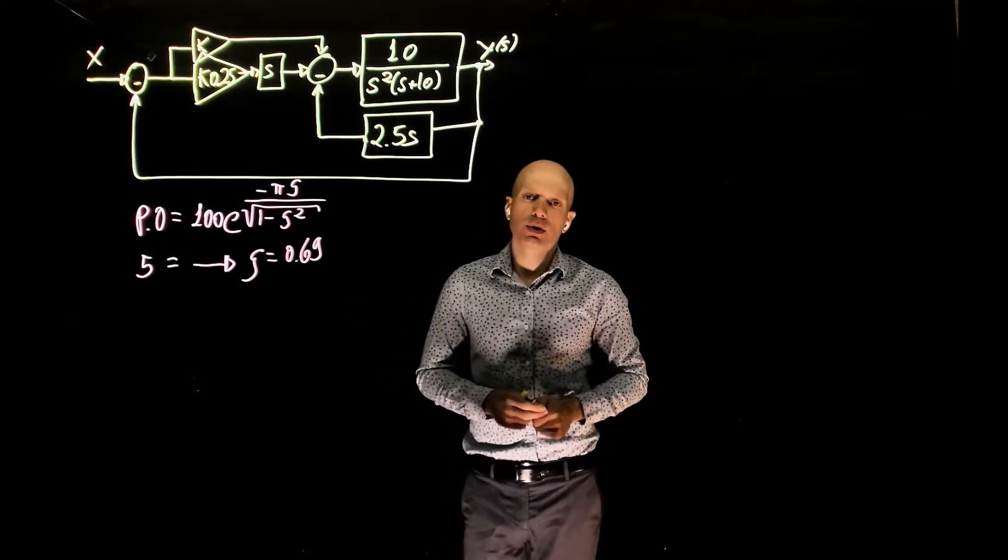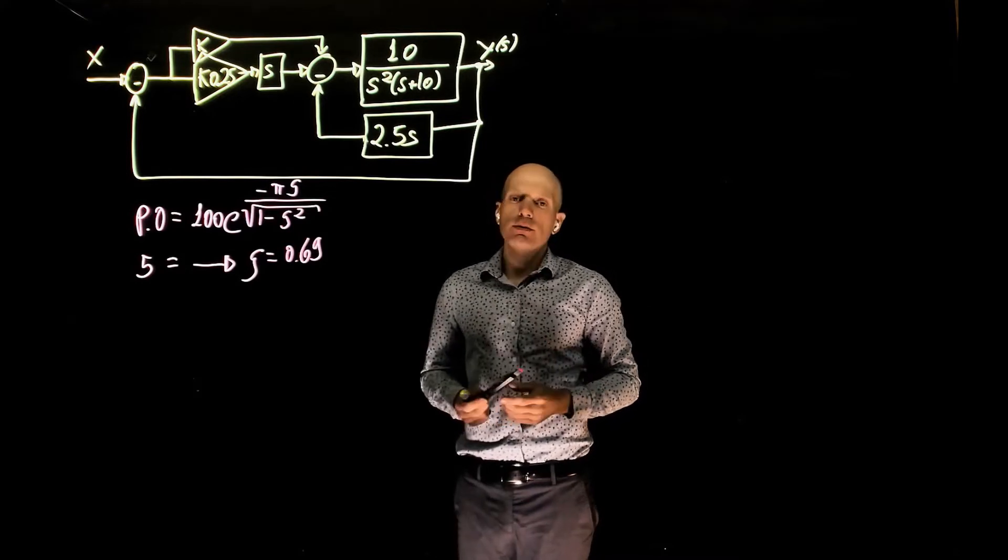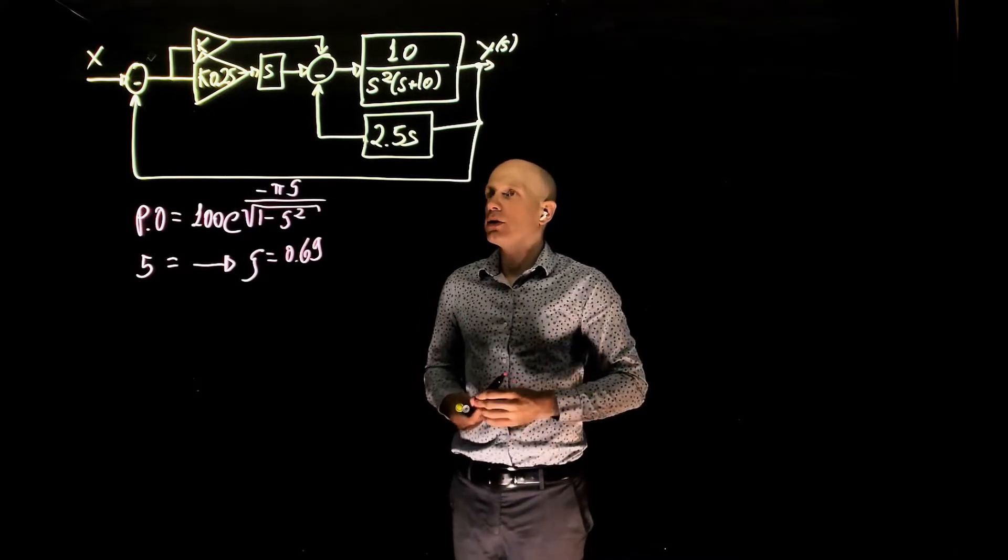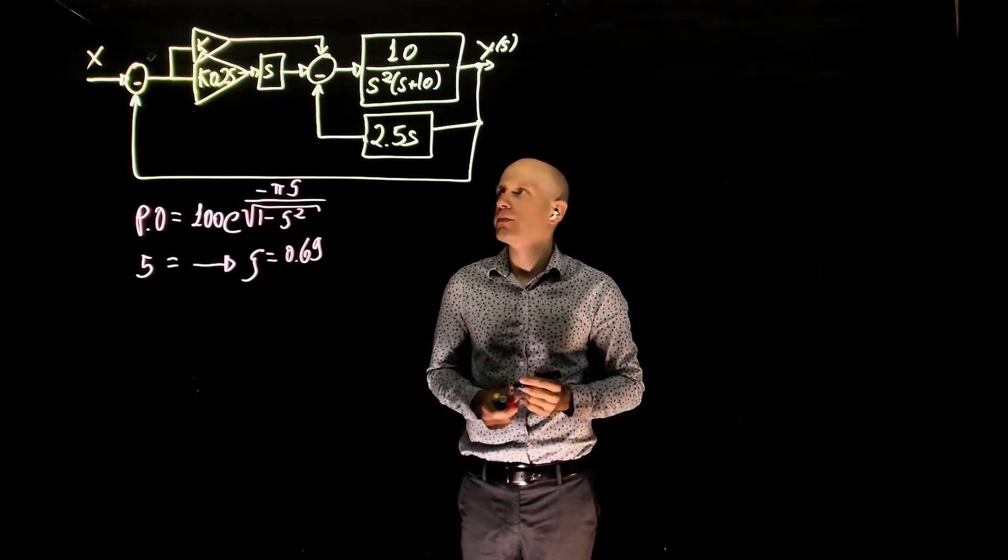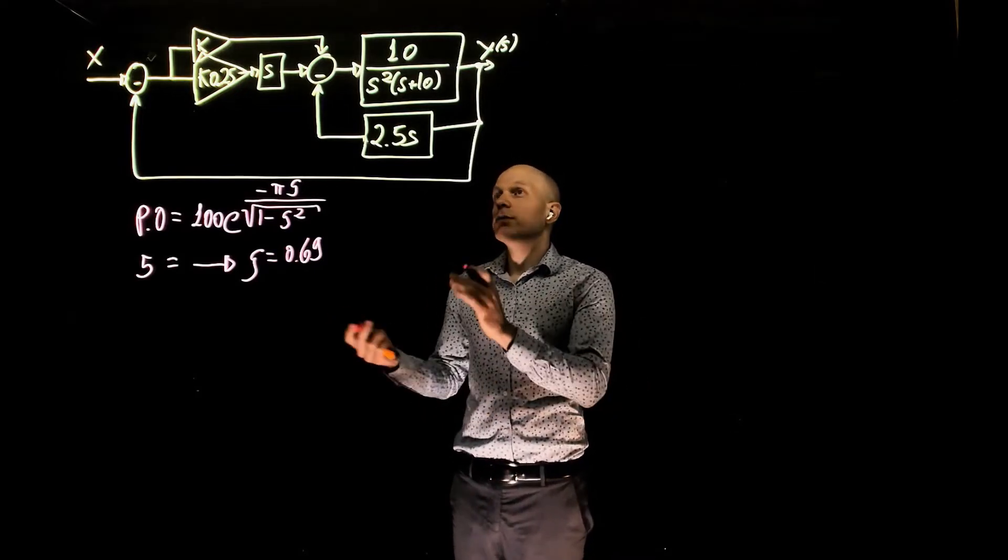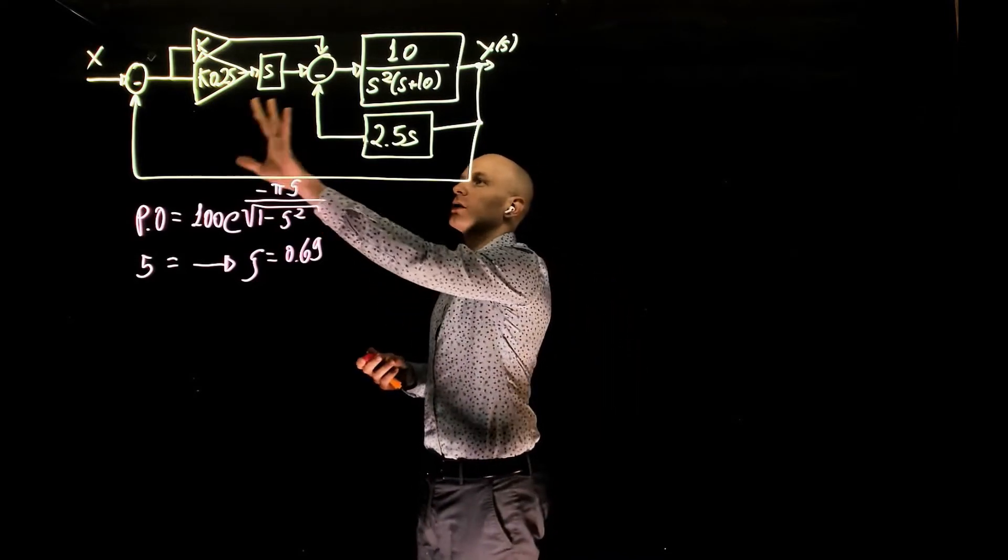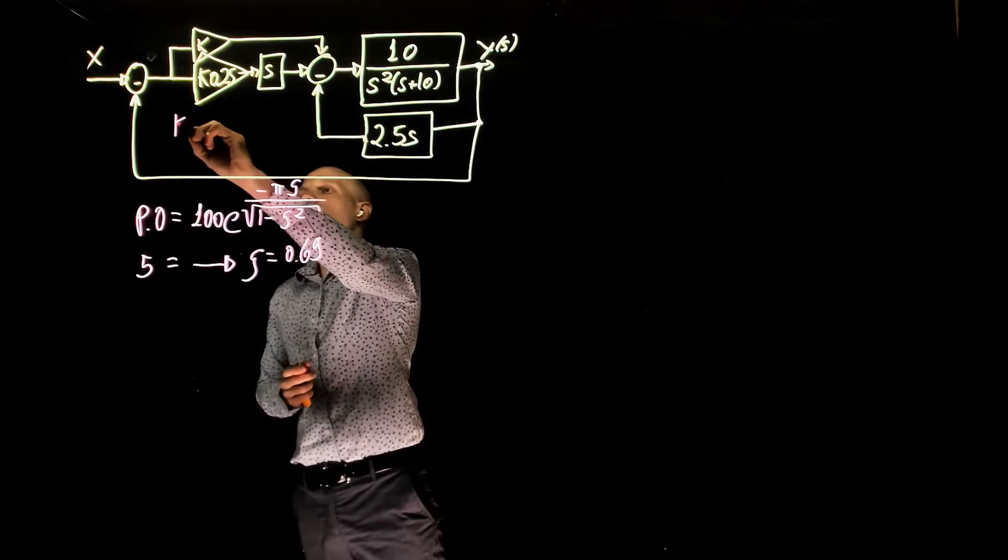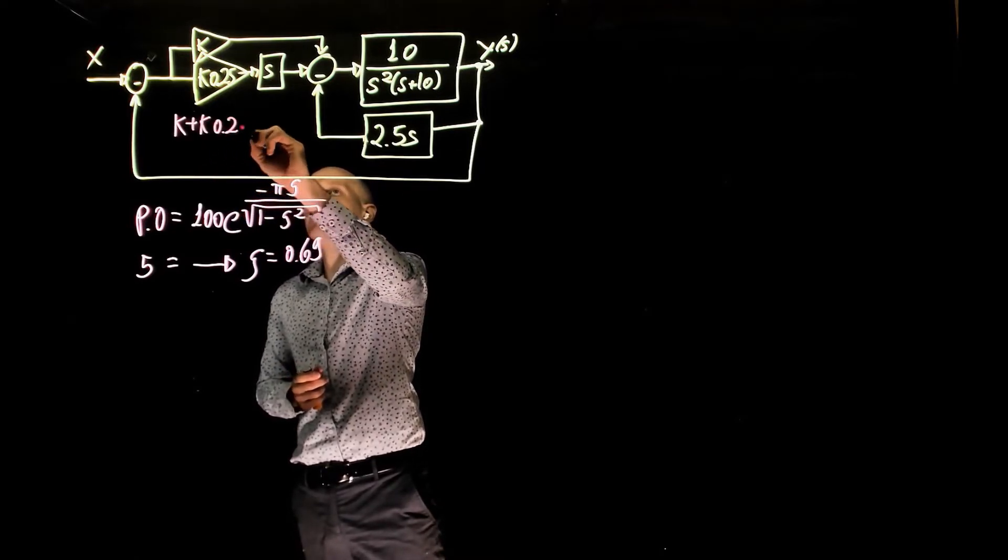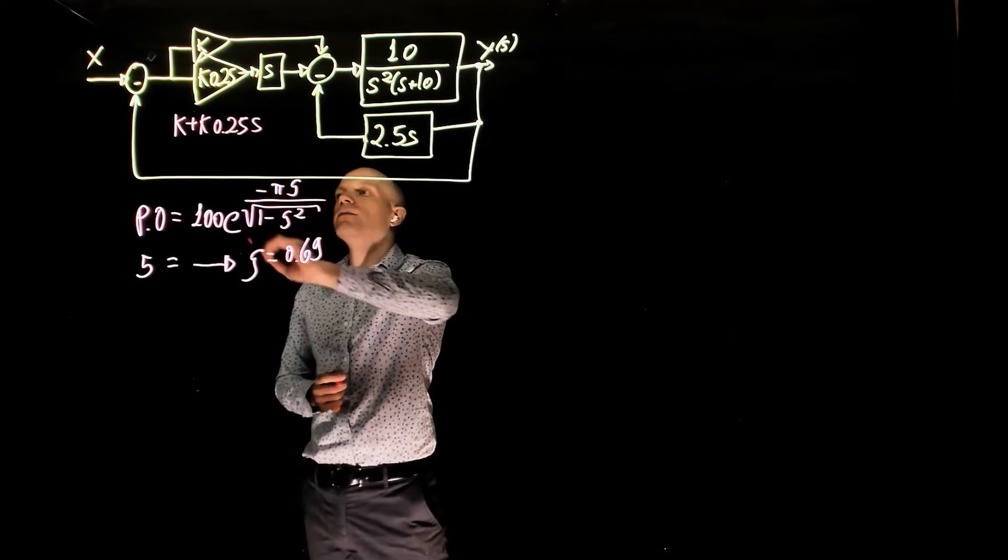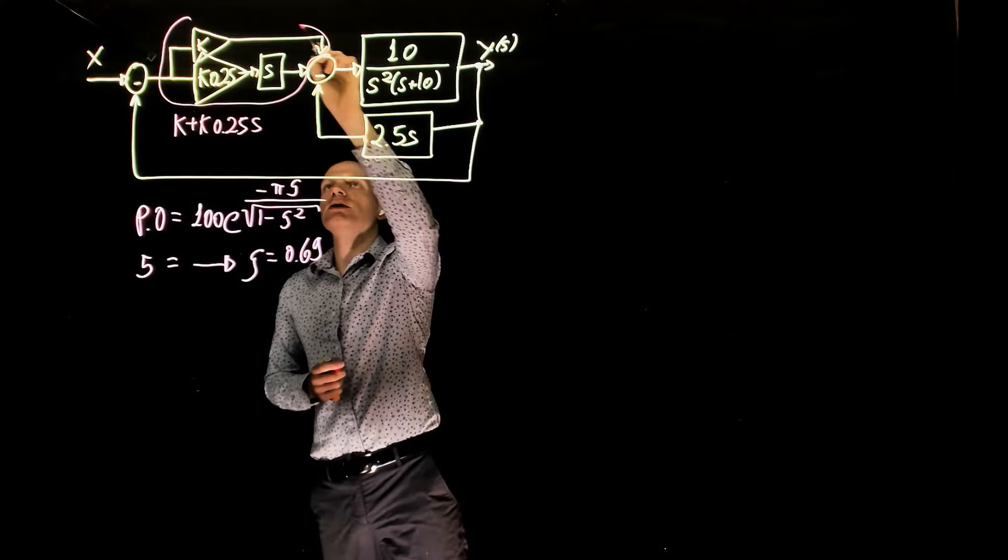We are going to do this analysis using the root locus analysis again, so to that we need to find the characteristic equation, and we need to put the characteristic equation in the standard form for root locus analysis. We need to simplify this block diagram first, but this is relatively simple. If you look at this feedforward loop, this is easy to solve, we have k plus k times 0.25s, this corresponds to this part of the diagram.